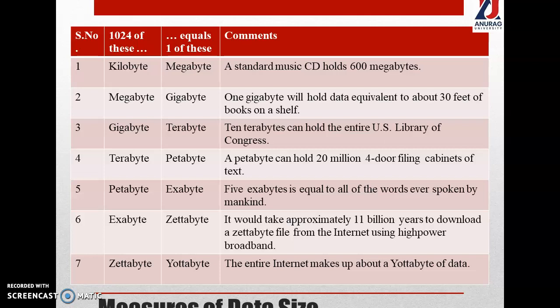An exabyte is something which is enormous. In fact, 5 exabytes is everything mankind has ever spoken since its existence, which is equivalent to 1024 petabytes. A zettabyte, if you consider it as a file and start downloading it with the highest-speed internet in the world, it will take 11 billion man-years to download a zettabyte of data, forming 1024 exabytes.